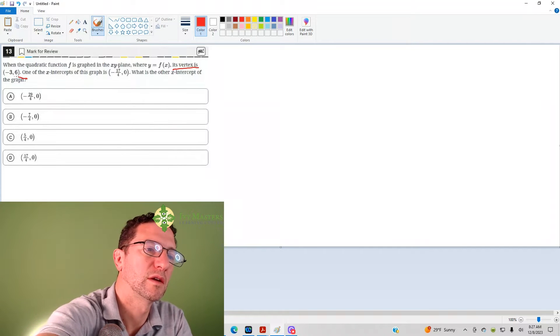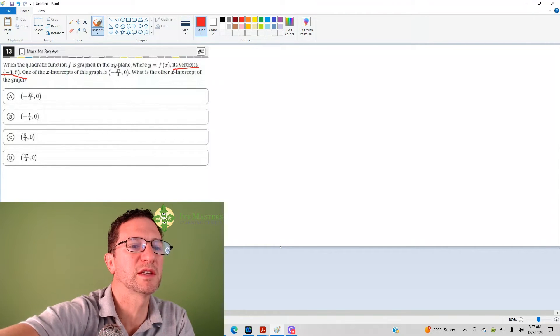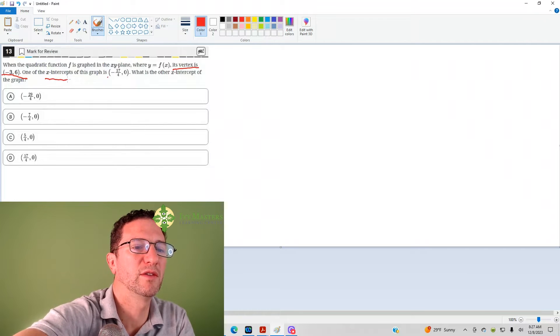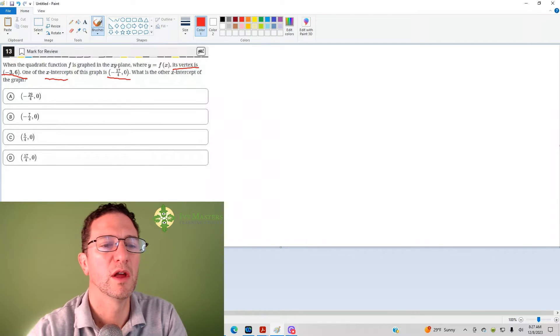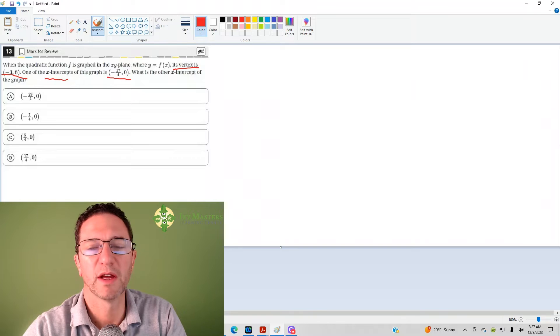One of its x-intercepts on the graph is negative 17 over 4, but what is the other x-intercept on the graph?